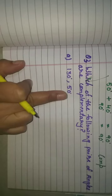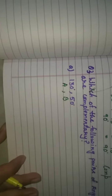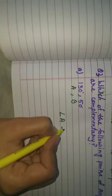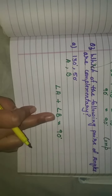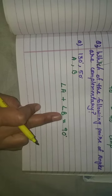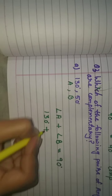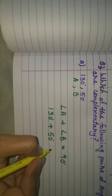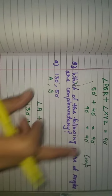The first part is 130 degrees and 50 degrees. You have to write down angle A and angle B. Now, the formula is: angle A plus angle B equal to 90 degrees. Put these values: A is 130 degrees plus B is 50 degrees. That gives us 180 degrees, not 90 degrees. So these are not complementary angles.